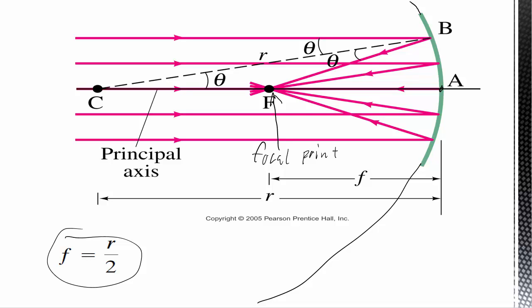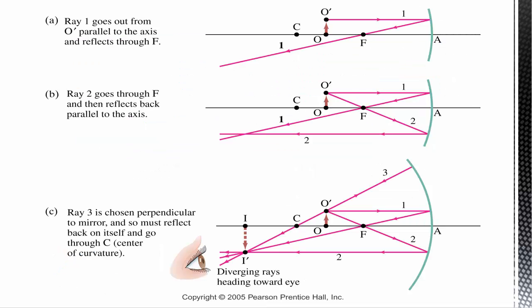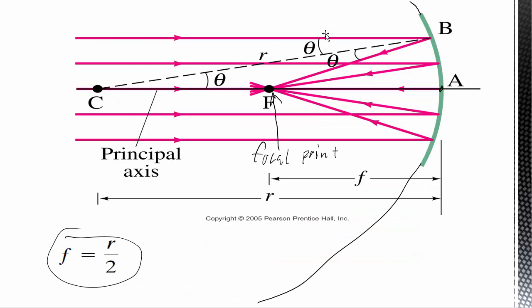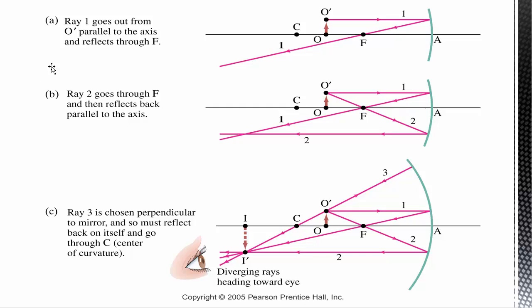Jot that down or commit it to memory. Now let's look at what happens when we make an image. So far, all we know is that parallel rays — parallel to each other and parallel to what we call the principal axis of the mirror, the line coming out perpendicularly from the center of our mirror — all converge at the focal point. That's all we know so far.